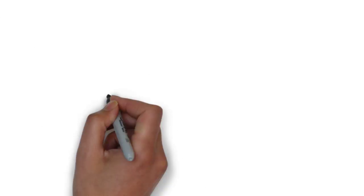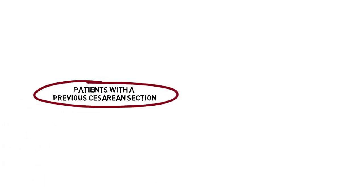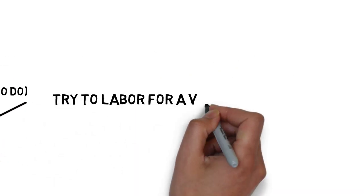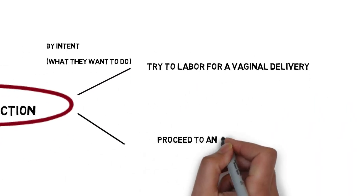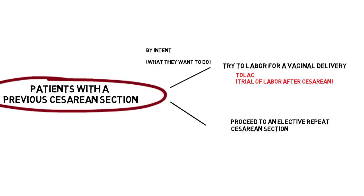Let's review the terms used here. We're talking about patients with previous cesarean deliveries. When it comes time for delivery, they can be divided by their intent. Those who will try labor and those who will proceed directly to elective repeat cesarean delivery, or simply TOLAC, trial of labor after cesarean, or elective repeat.